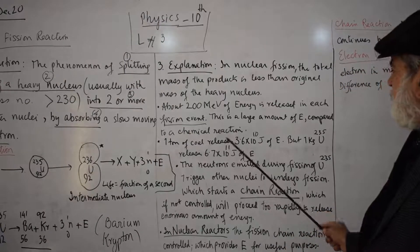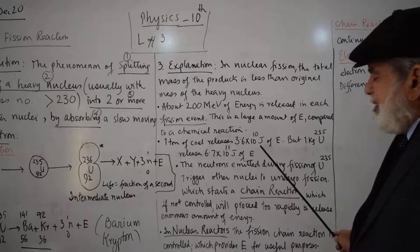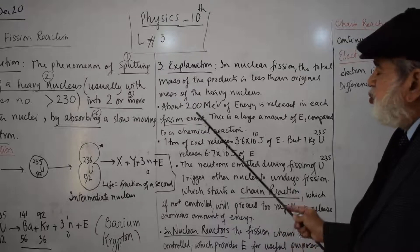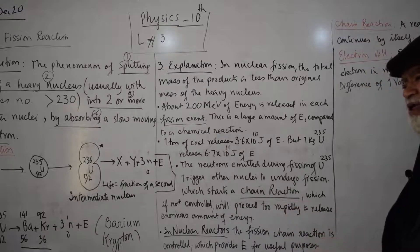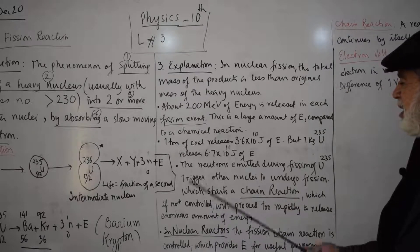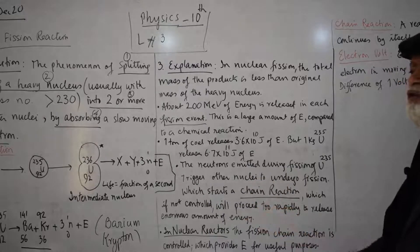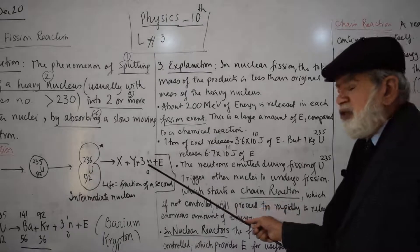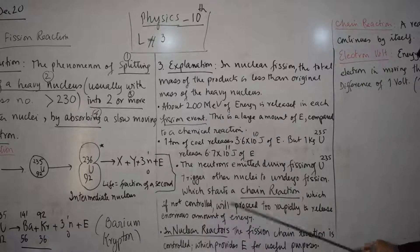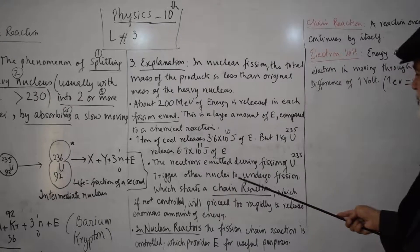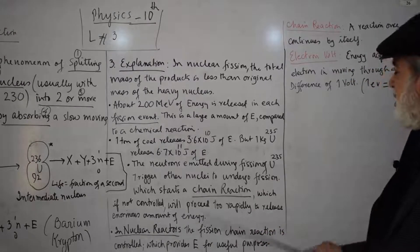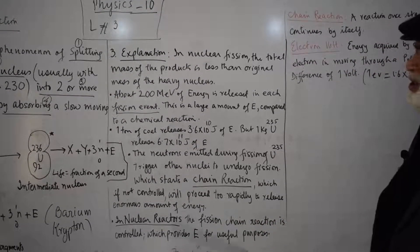About 200 million electron volts of total energy. This starts a chain reaction which, if not controlled, will proceed indefinitely. Nuclear reactors maintain a controlled reaction.